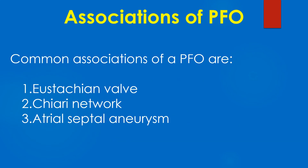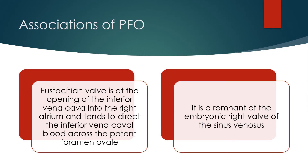Common associations of a PFO are: 1) Eustachian valve, 2) Chiari network, and 3) Atrial septal aneurysm. The Eustachian valve is at the opening of the inferior vena cava into the right atrium and tends to direct inferior vena caval blood across the patent foramen ovale. It is a remnant of the embryonic right valve of the sinus venosus.